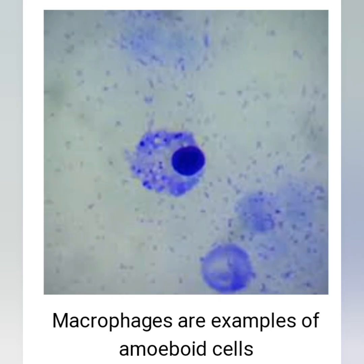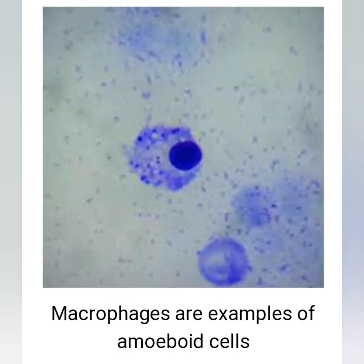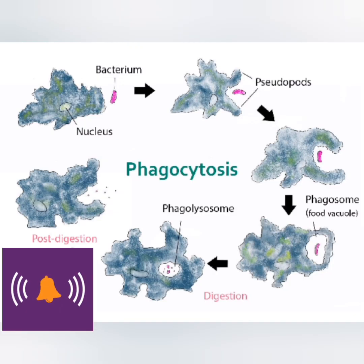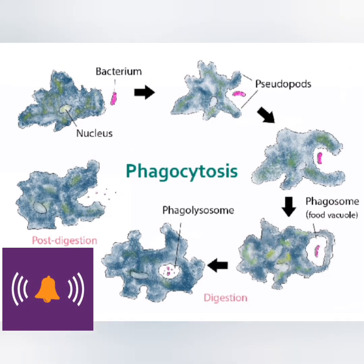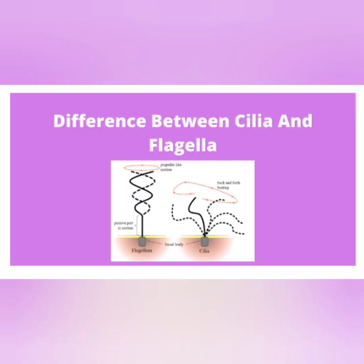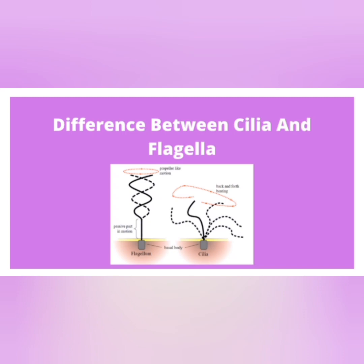Next we are going to see about ciliary movement. Cilia are found in almost all eukaryotic cells. Cilia help in overall development of the body and function in the cell. Cilia are further divided into two types: motile and non-motile cilia.